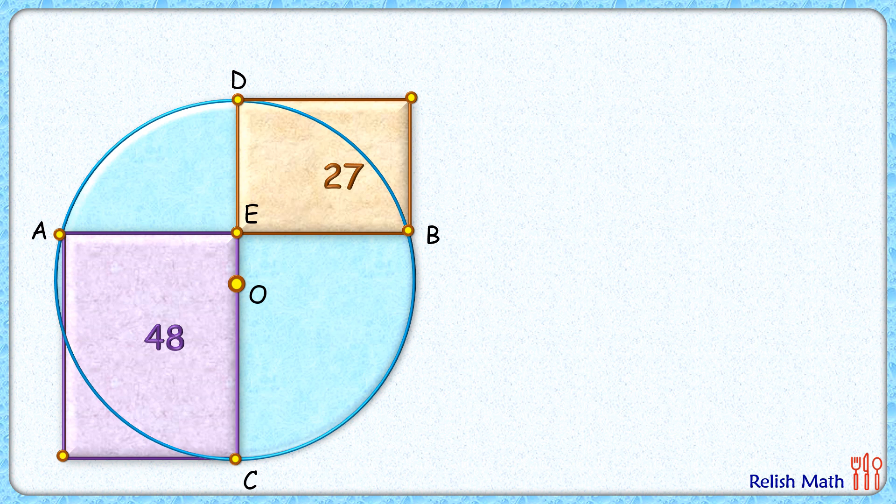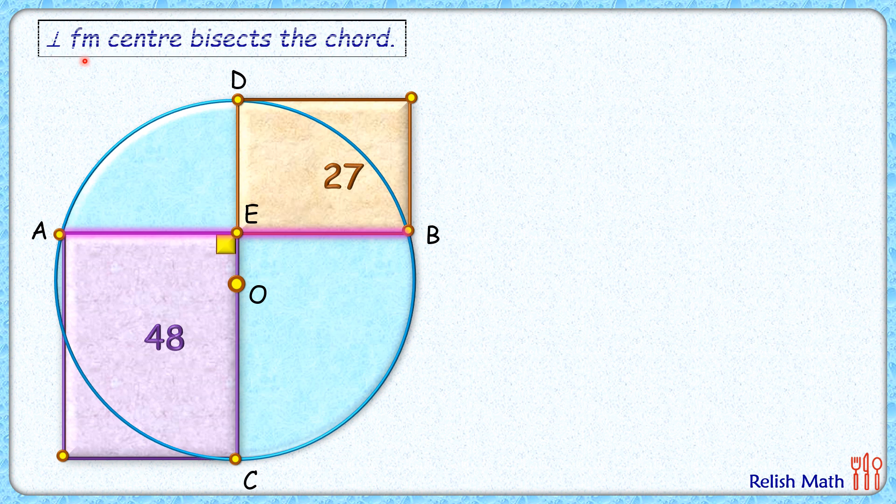Let's check this interesting solution. This purple figure is a rectangle, and thus angle E is 90 degrees. Now with respect to the circle, AB is a chord, and from center O a perpendicular OE is drawn. By theorem, we know that a perpendicular from center bisects the chord, and thus AE length and EB length will be equal. So if AE is x centimeters, EB will be the same x centimeters. Let's assume DE length is y and EC length is z centimeters.